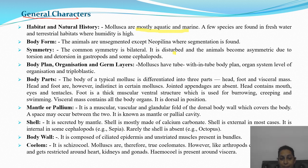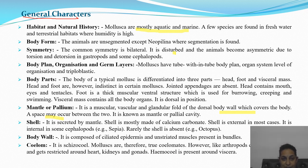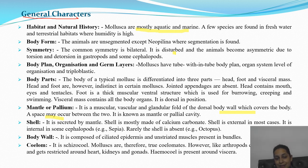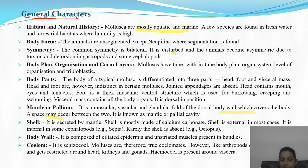The mantle or pallium is muscular and glandular, forming folds of the dorsal body wall that cover the body, creating a space known as the mantle or pallial cavity. The shell, secreted by glandular folds of the mantle, is mostly calcium carbonate, external in most cases, and internal in some cephalopods. Rarely the shell is absent, as in Octopus.